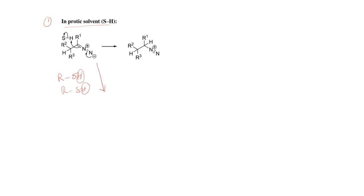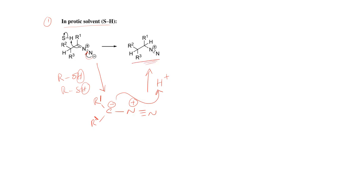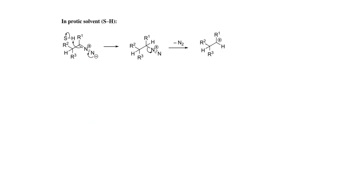In the first step, this nitrogen with negative charge will shift towards the other nitrogen atom and the bond between carbon and nitrogen will break towards the carbon atom. The carbon attached to R1 and R2 gives nitrogen with a triple bond to nitrogen. So this nitrogen has a positive charge and this carbon has a negative charge. As the protic solvent is present, this carbon will attack on a proton and gain it, producing this compound. In the next step, nitrogen is removed in the form of a nitrogen molecule.